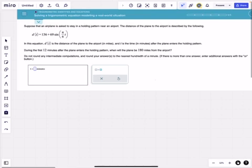Suppose that an airplane is asked to stay in a holding pattern near an airport. The distance of the plane to the airport is described by the following: d(t) is equal to 136 plus 69 sine of pi over 6 times t. In this equation, d(t) is the distance of the plane to the airport in miles, and t is the time in minutes after the plane enters the holding pattern.